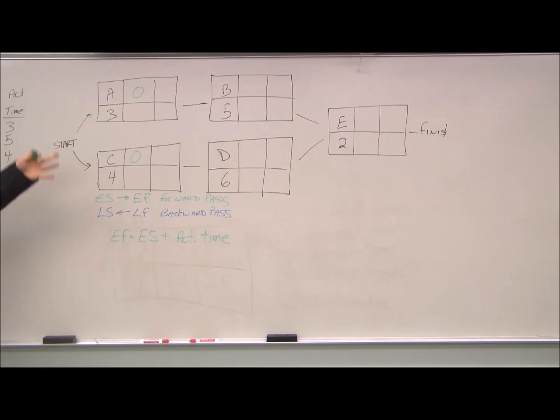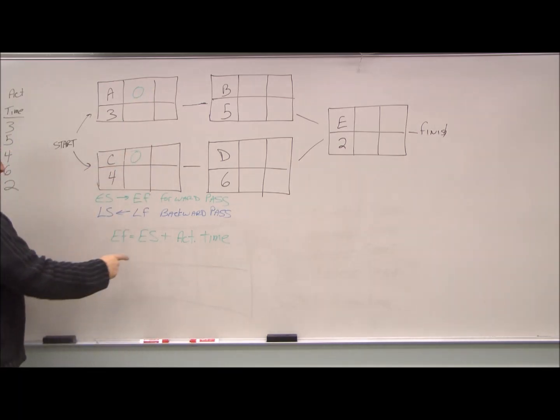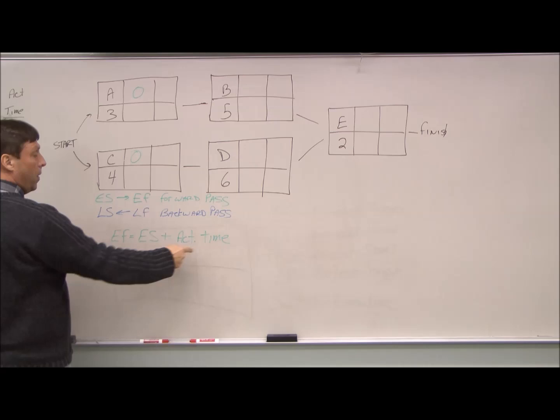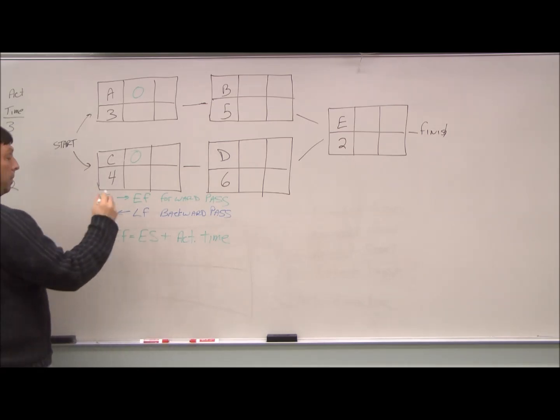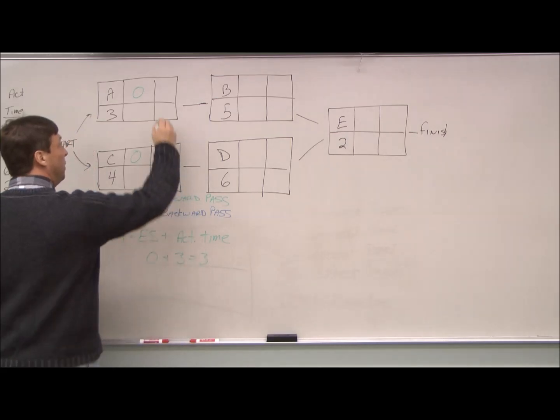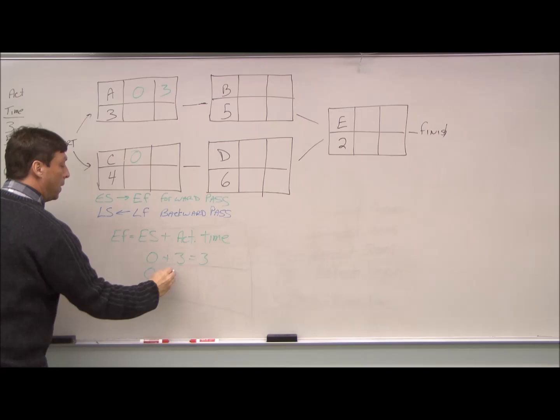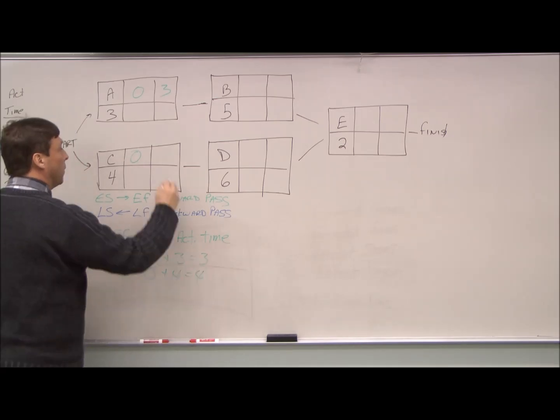The clock doesn't start ticking until we do something on these two projects. From there, we can calculate our earliest finish time by the earliest start plus the activity time. So for A, it's zero plus three equals three. And for C, it's zero plus four equals four.